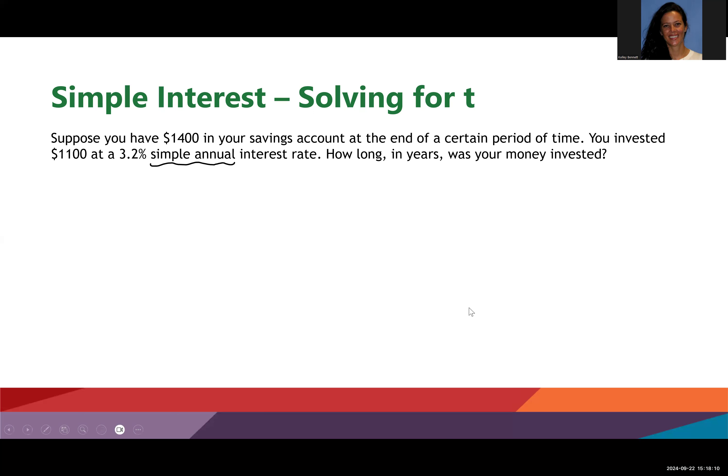This is a question involving simple interest, so I know I = PRT. My first value I see is $1,400. So is that interest? Is that principle? It says at the end of a certain period of time. So what this is, is your account balance at the end of it all—what you invested plus your interest. That is your future value. So at the end of all this time, you have $1,400.